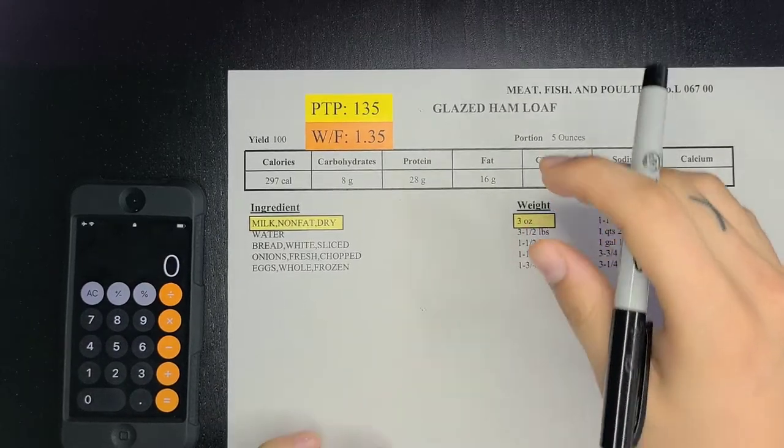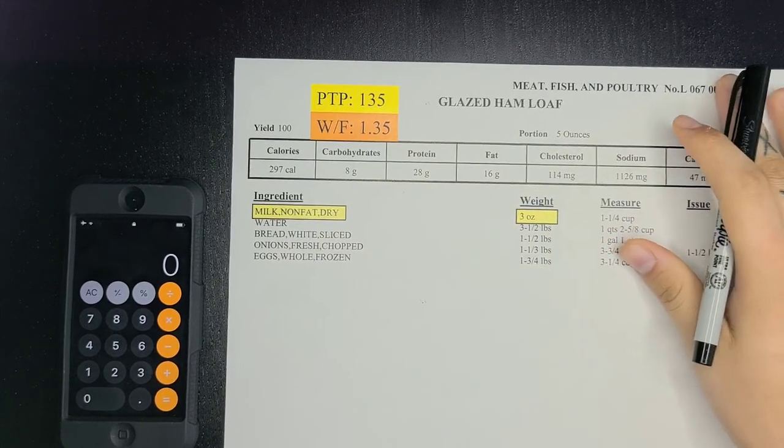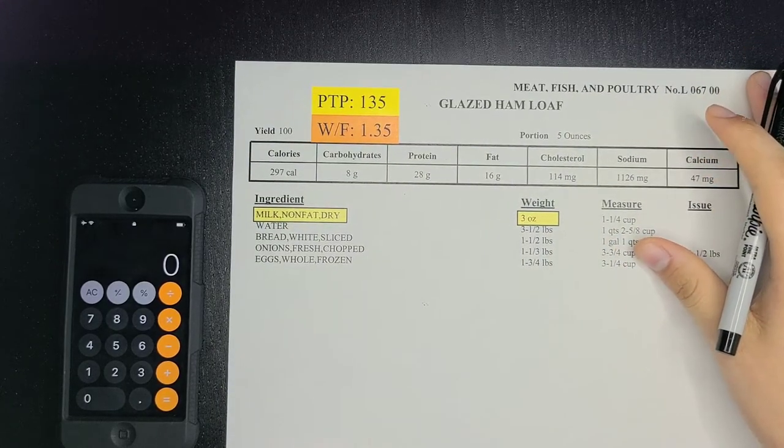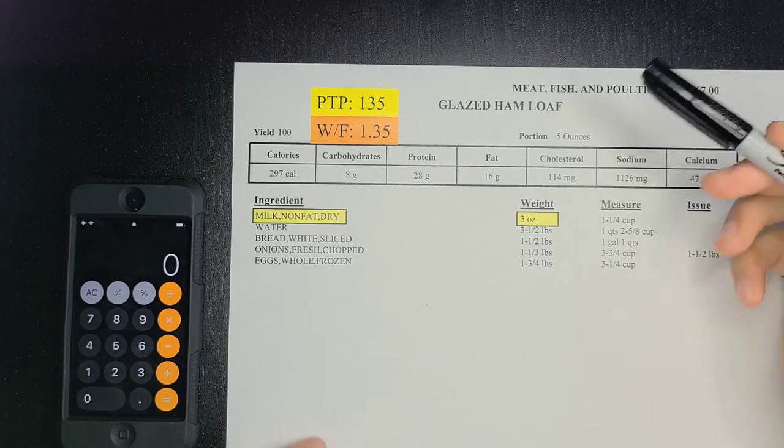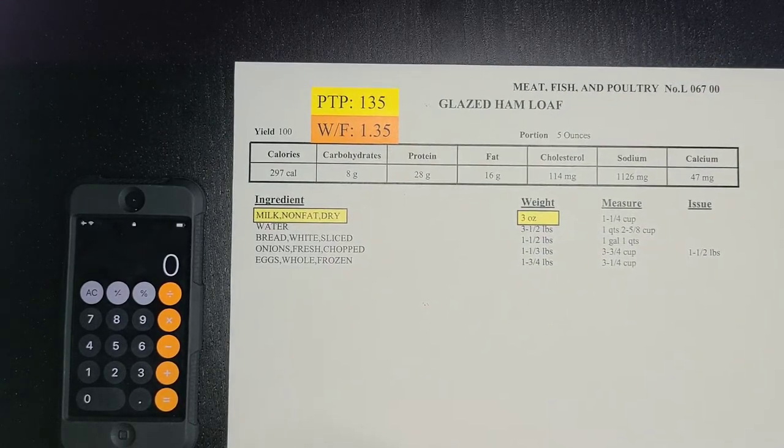Hey everyone, today we're going to be going over some more recipe conversions using your yield adjustment formula. First thing you want to do is multiply your working factor by all these ingredients in order to get your new weight and measure.